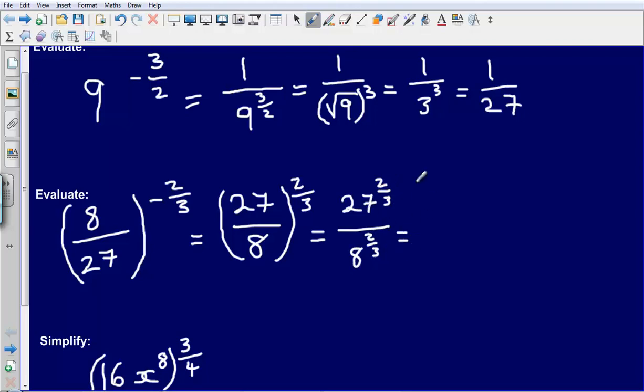So 27 to the 2 thirds, well let's evaluate this, this becomes the cube root of 27 squared. So the cube root is coming from the denominator, the squared part is coming from the numerator. And so that means that 8 to the 2 thirds is the cube root of 8 squared.